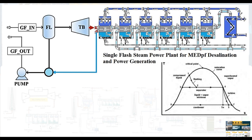The exhaust steam from the turbine unit is responsible for generating steam inside the first effect of MED. The condensate steam is returned through a mixer and pumped back to the geothermal field. Effect by effect — this is the normal operation for MED.